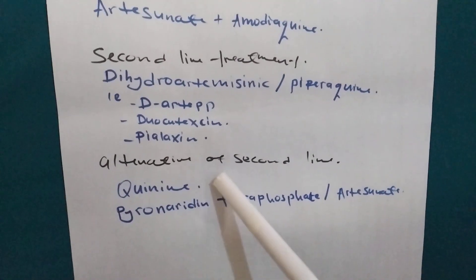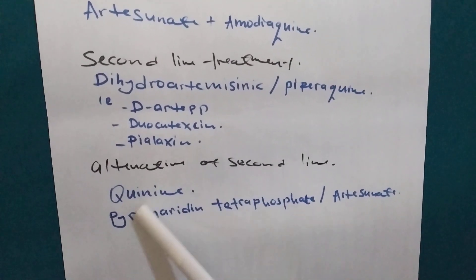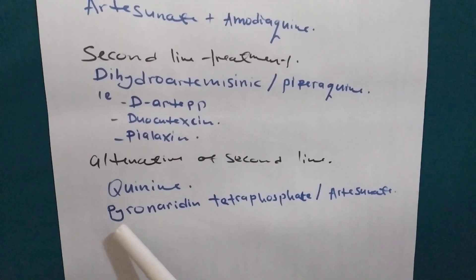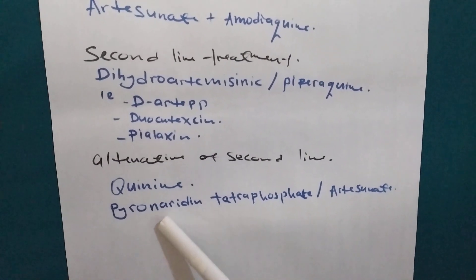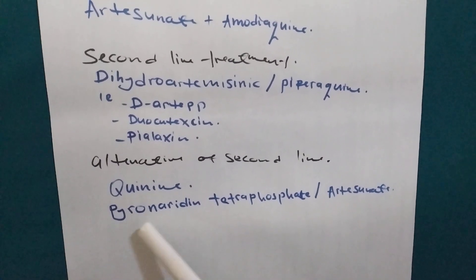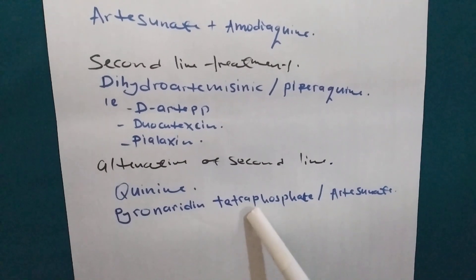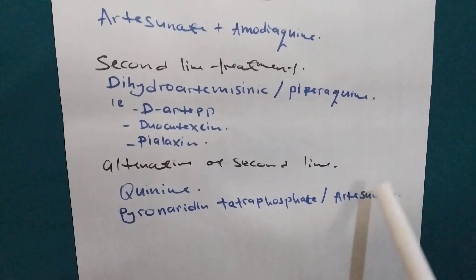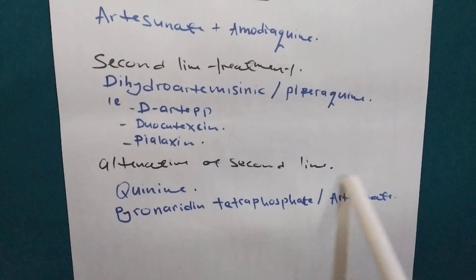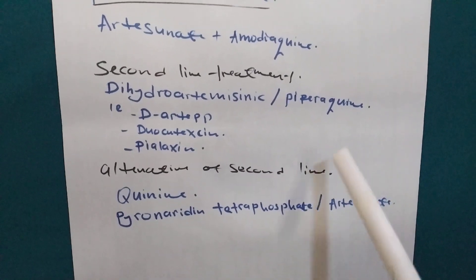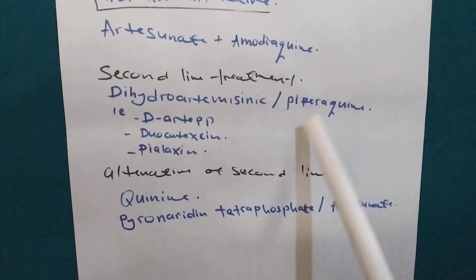And then the second line alternative, we have Quinine and then Pyronaridine, I don't know if I pronounced it well, and then Tetraphosphate and Artesunate. This one is the second line alternative. You use it if these ones are not there.